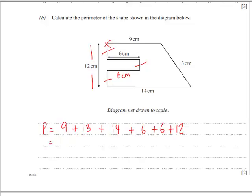Then summing up all these numbers: 9, 13 is 22, add 14 is 36, add 6 is 42, another 6 is 48, and add 12 gives you 60. The units are centimeters.